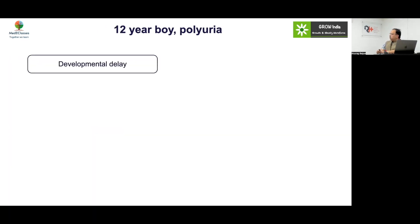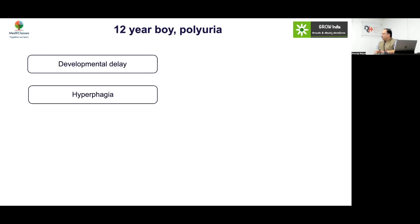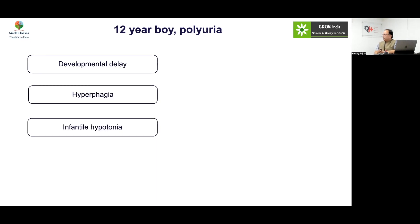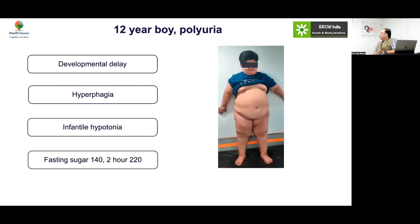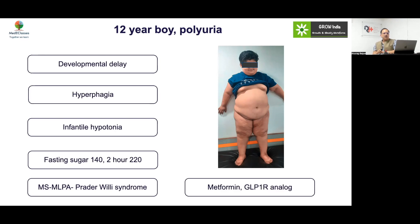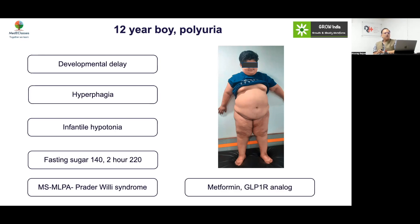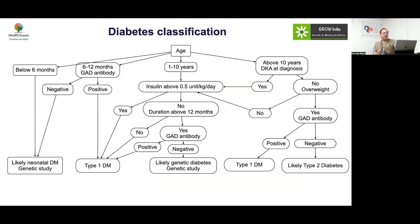Case 19: A 12-year-old boy with polyuria, developmental delay, hyperphagia, and infantile hypotonia. The diagnosis is clear — classical features of Prader-Willi syndrome. Definitely there are various associated disorders, and you can consider metformin and GLP-1 agonists in management.